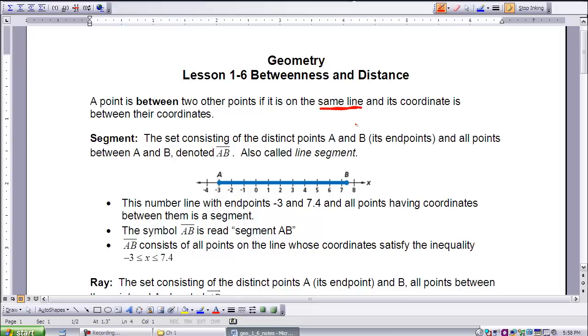The second thing we're going to define in this lesson is what is a segment. You have looked at segments back in third grade, or even before that. But we're going to be very specific in this course about what it is to be a segment. It is a set consisting of the distinct points A and B, those are its endpoints, as you can see in this picture below, and all points between A and B, denoted AB with this bar over the top.